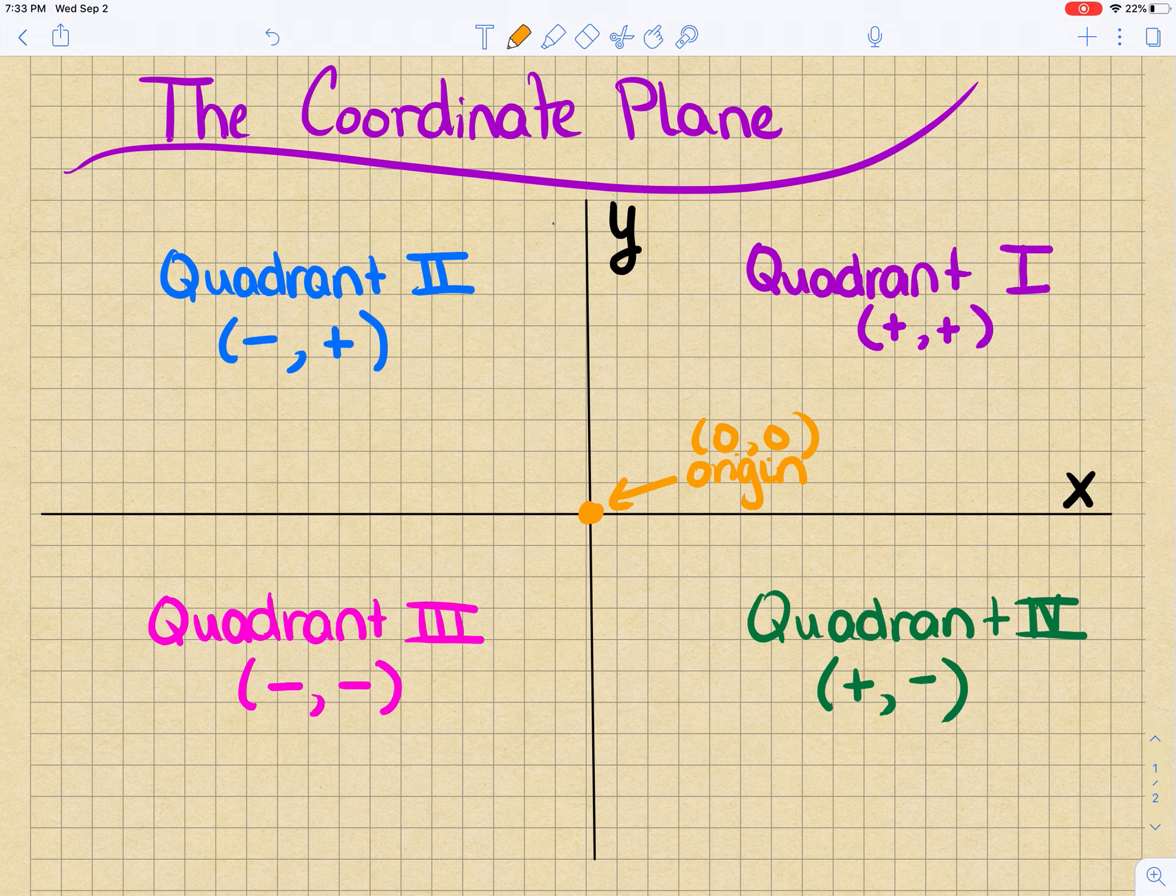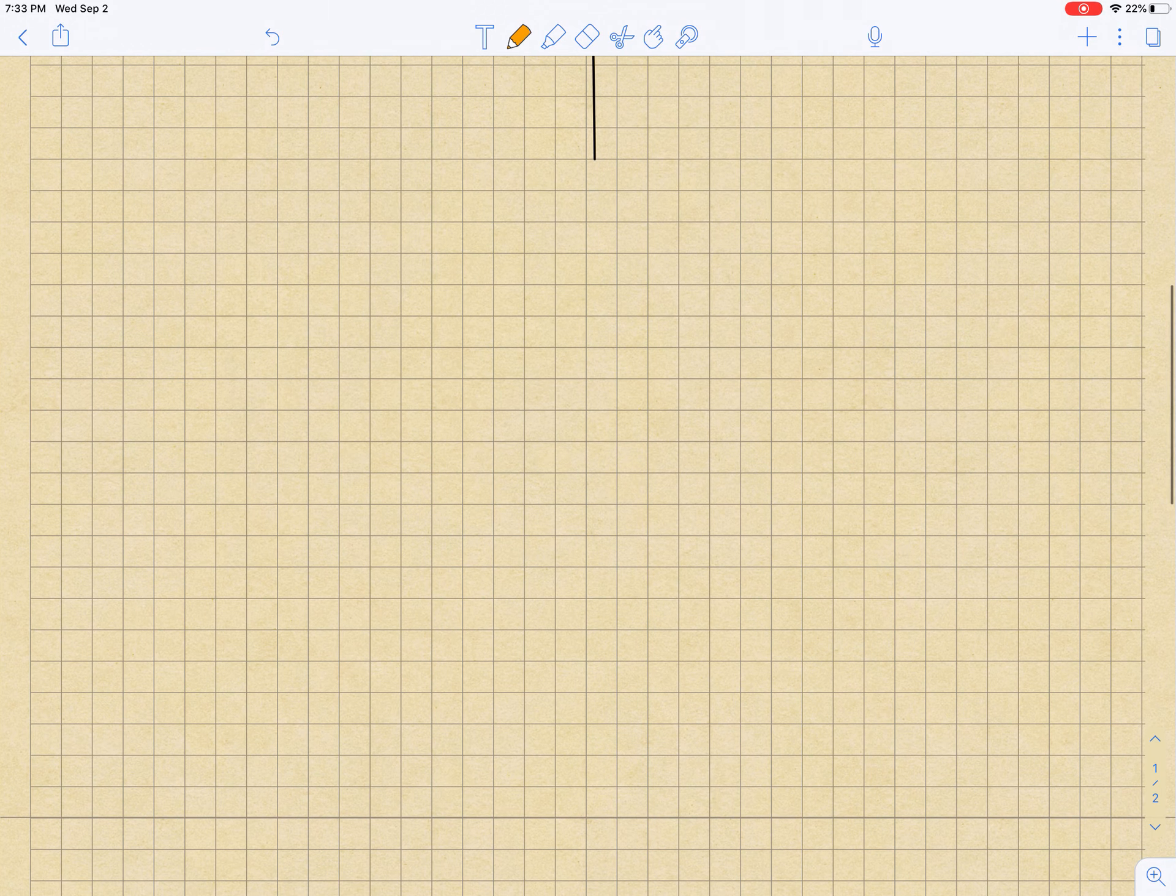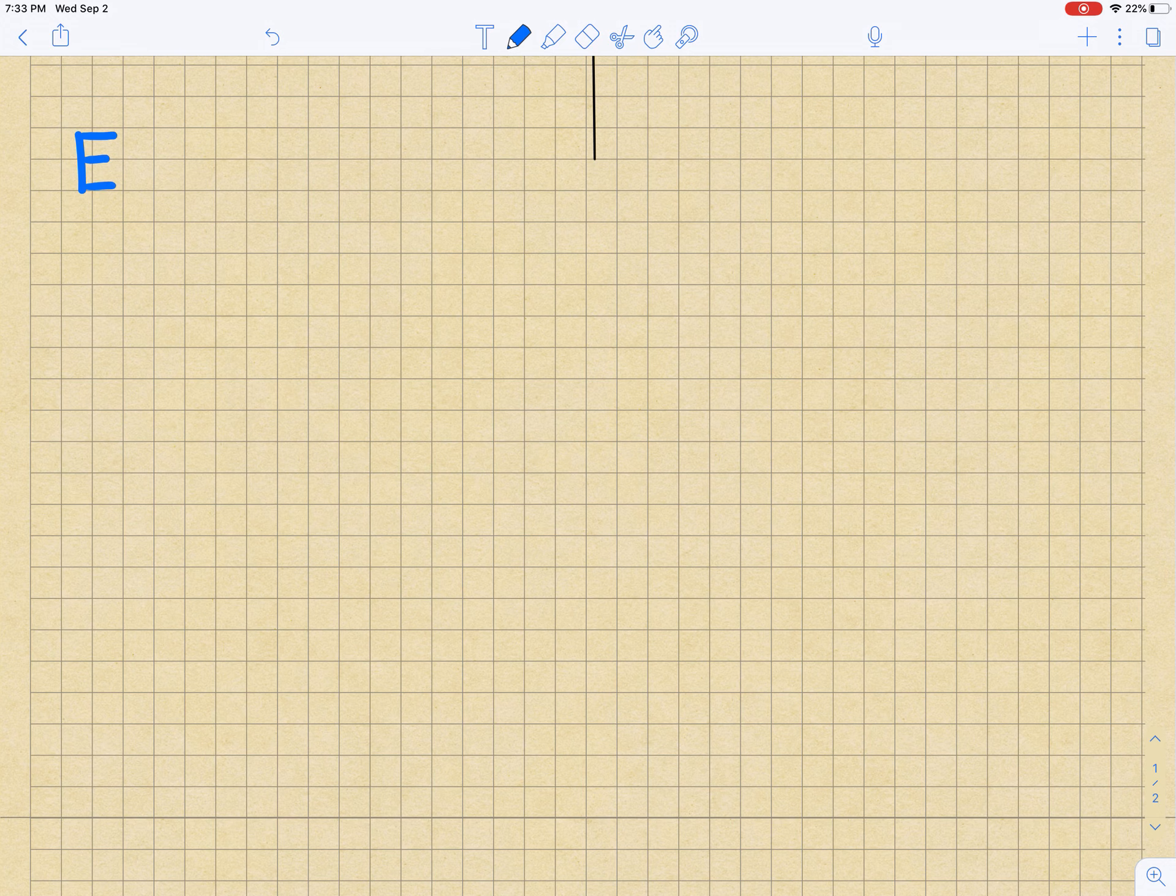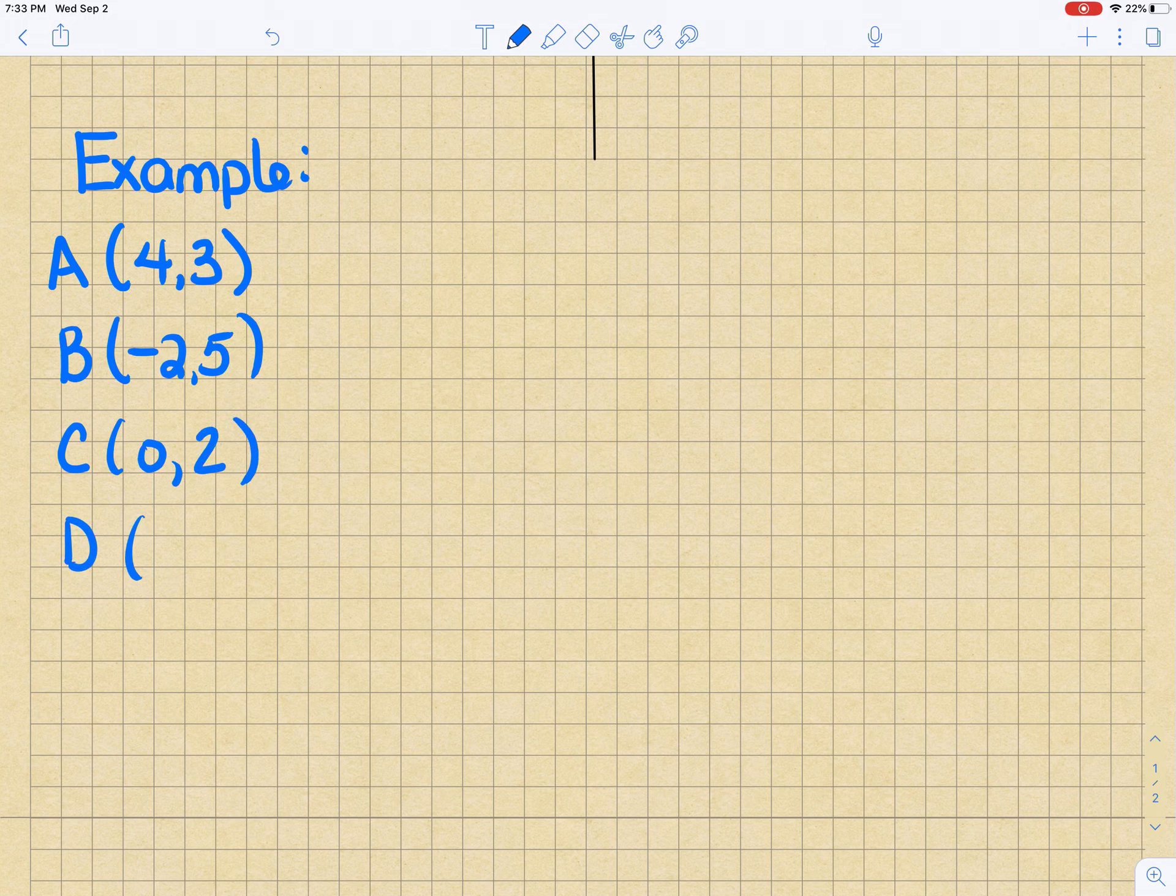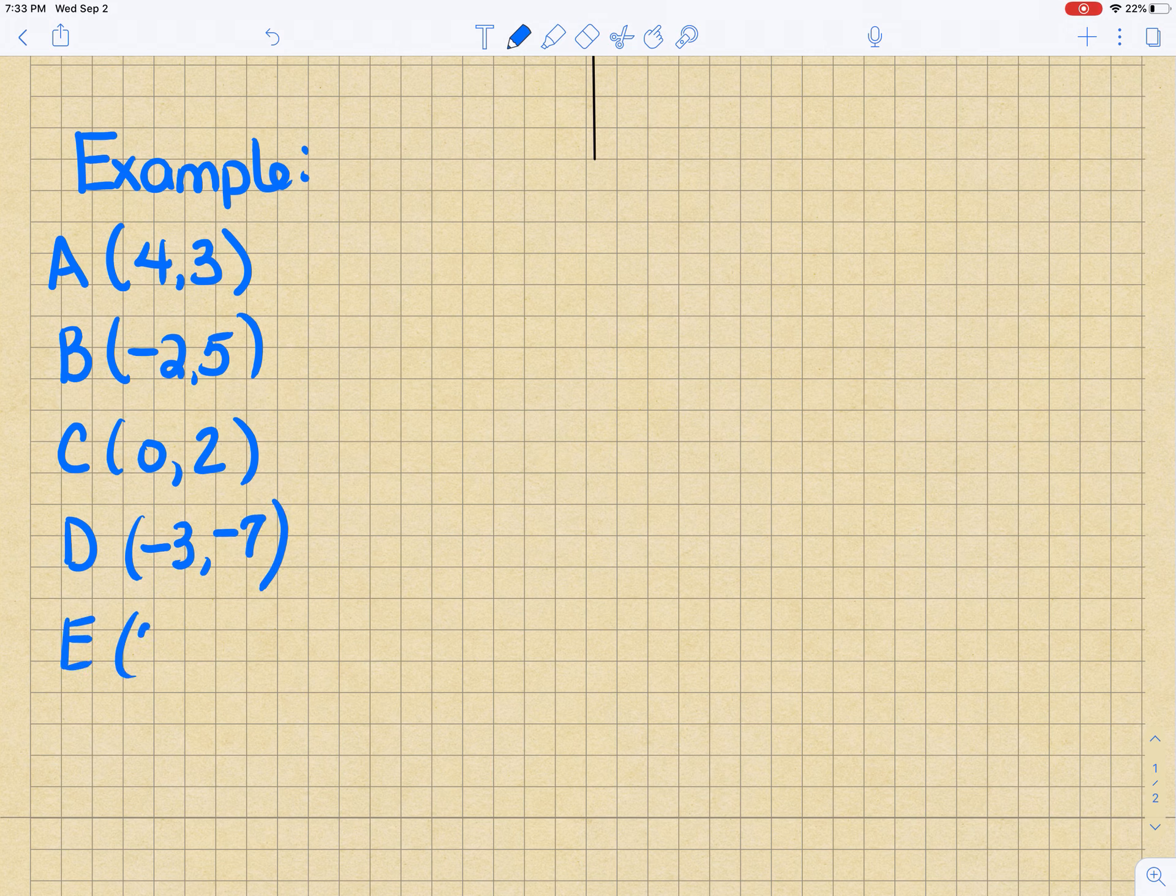Let's just do one or two small practice problems, and then the rest you're going to do on your own. You might need to pause this if I'm going too fast, but I'm going to do an example problem. Let's just graph these points: A(4, 3), B(-2, 5), C(0, 2), D(-3, -7), E(7, -4), and F(5, 0).